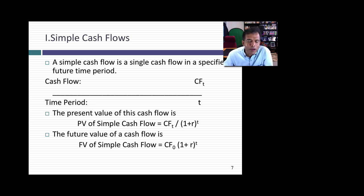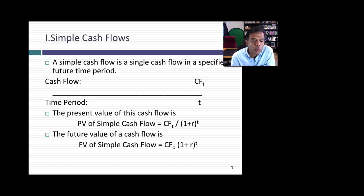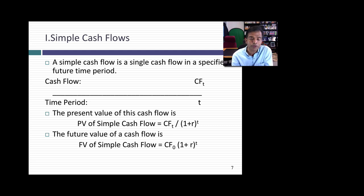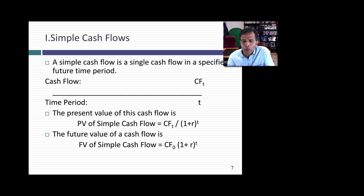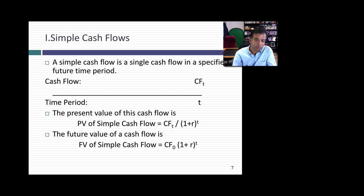Let's start with a simple cash flow. You're going to pay me $10 million ten years from now — how much is it worth today? I take the $10 million and discount it back at whatever your discount rate is. Assuming a discount rate of 8% — which includes compensation for giving up current consumption, inflation, and risk — I divide $10 million by (1.08) raised to the power of 10. That gives a present value well below $10 million. To go the other direction, I multiply $10 million by (1.08) raised to the power of 10 to get the future value.